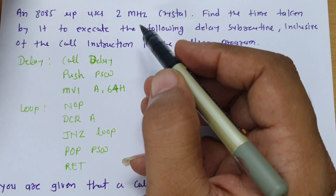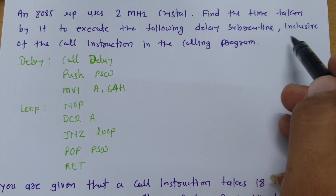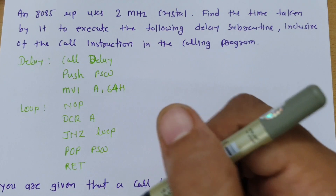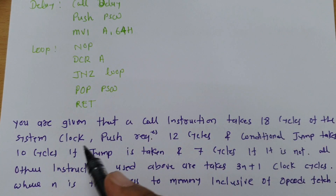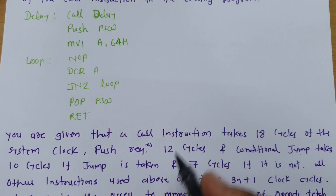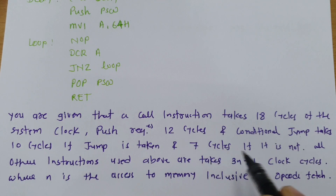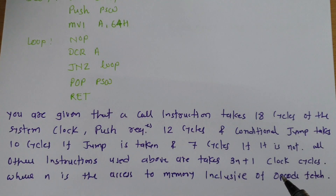Now the second question: an 8085 microprocessor uses a 2 megahertz crystal. Find the time taken to execute the following delay subroutine, inclusive of the CALL instruction in the calling program. The CALL instruction takes 18 clock cycles, PUSH takes 12, conditional jump takes 10 if taken and 7 if not, and all other instructions take 3N plus 1 clock cycles, where N is memory accesses inclusive of opcode fetch.